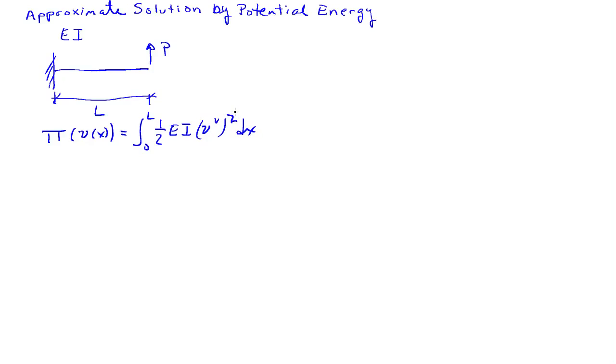Second derivative of the deflection squared, so that's the curvature squared, and then the potential load, which is minus P times the deflection at the tip of the beam.